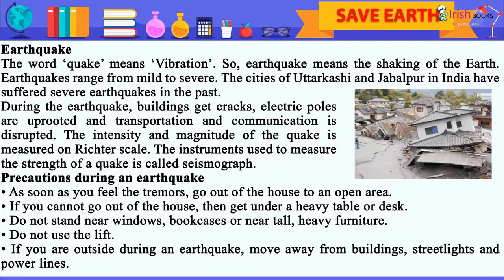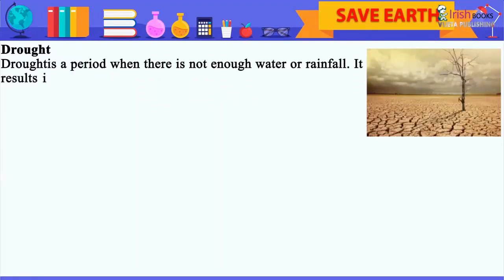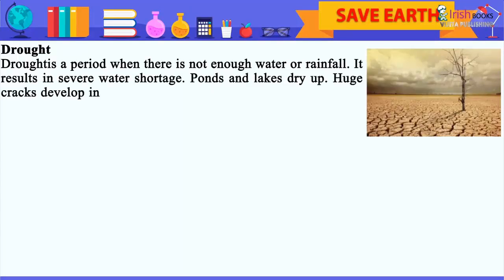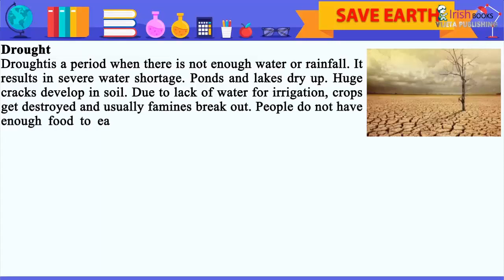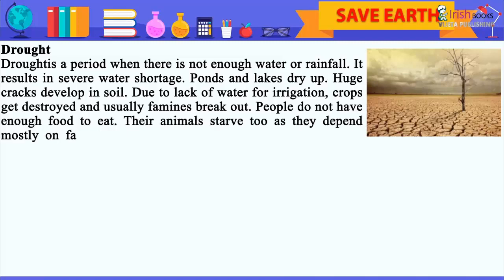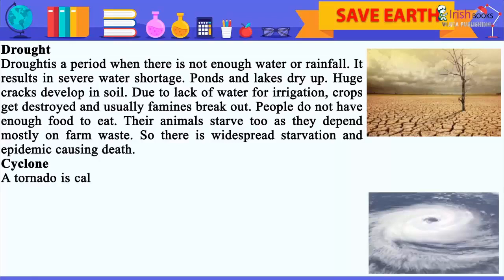Drought is a period when there is not enough water or rainfall. It results in severe water shortage. Ponds and lakes dry up and huge cracks develop in the soil. Due to lack of water for irrigation, crops get destroyed and famines usually break out. People do not have enough food to eat and their animals starve too. There is widespread starvation and epidemic, causing death.